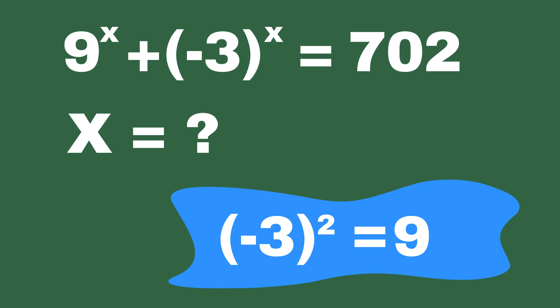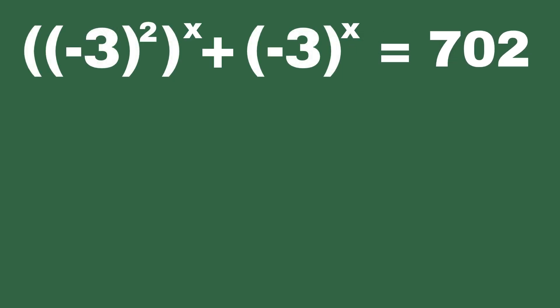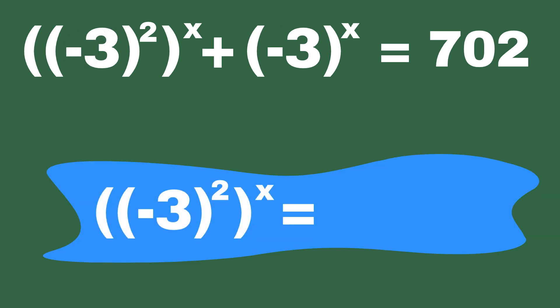By substituting 9 with minus 3 to power 2, we can rewrite the equation in a way that highlights the relationship between the two terms. Now, let's apply the power rule to simplify things further. The power rule tells us that when dealing with exponents, we have the flexibility to rearrange the order of the powers. This means we can take the x and move it inside the parentheses, combining it with the base, and take the 2 and move it outside the parentheses.